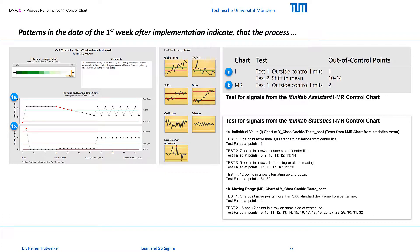The IMR chart from the Assistant displays two test results for the course of the individual values. Test 1 – One value outside the control limits. This is the overlooked invalid value outside the range of the rating scale. Test 2 – A shift of the mean from the 10th to the 14th value. After a very bad start, the taste of the cookies improved continuously in this period of the first week. In this ramp-up phase, our measures became more and more effective.